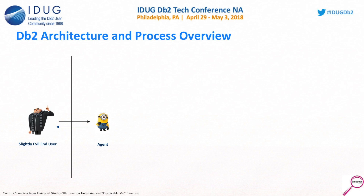This agent is your minion — he's going to do your bidding and represent you as you go through the process of getting data in the database. One thing to mention right off the bat is that the agent is going to be writing out information about what it's doing: inserts, updates, deletes, whether things are committed or uncommitted. Those are going to be written to a log buffer, and as the buffer fills, it'll eventually be flushed out to log, constantly keeping track of what the agent is doing.